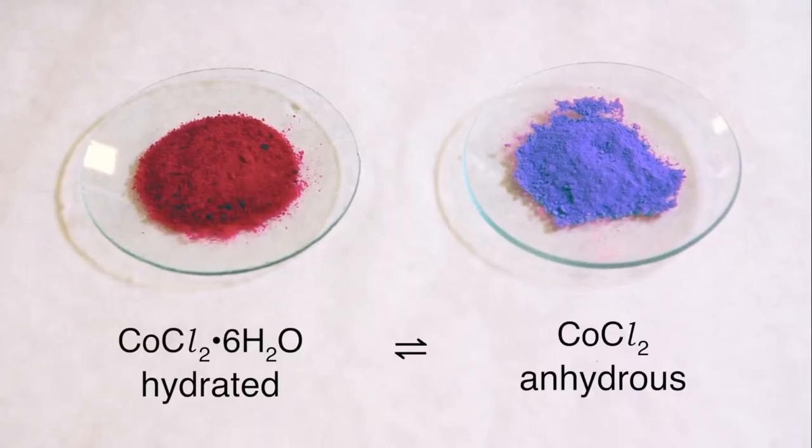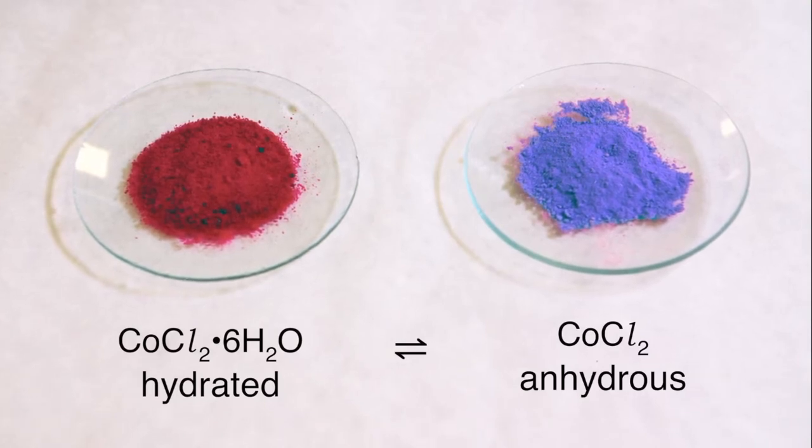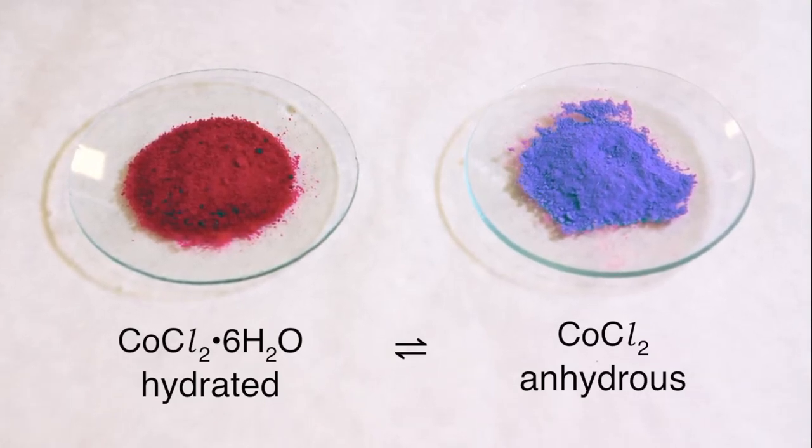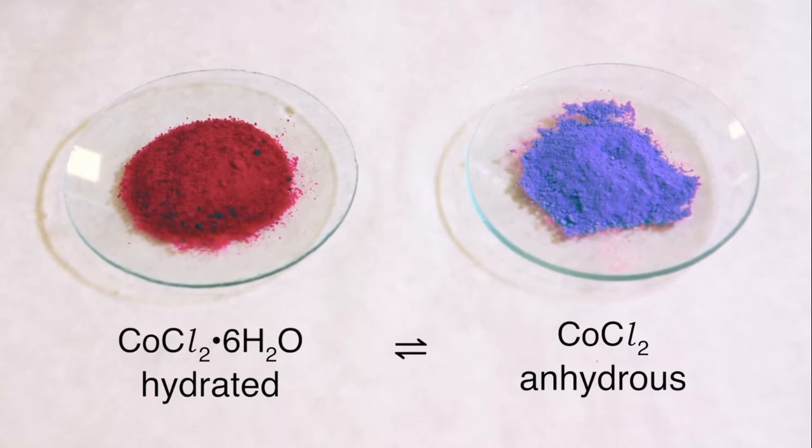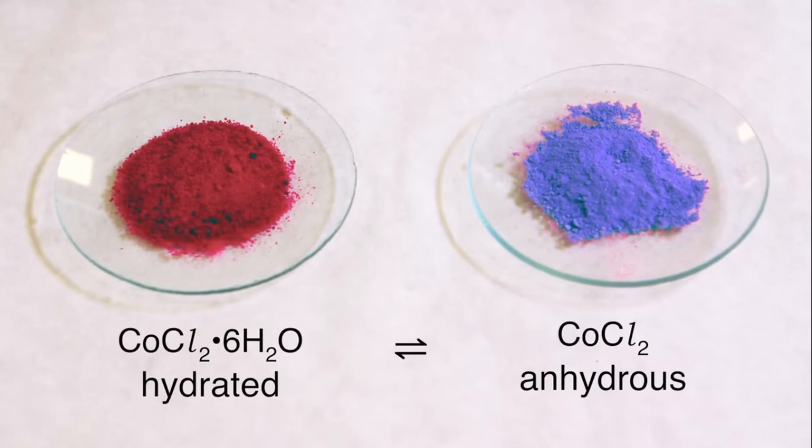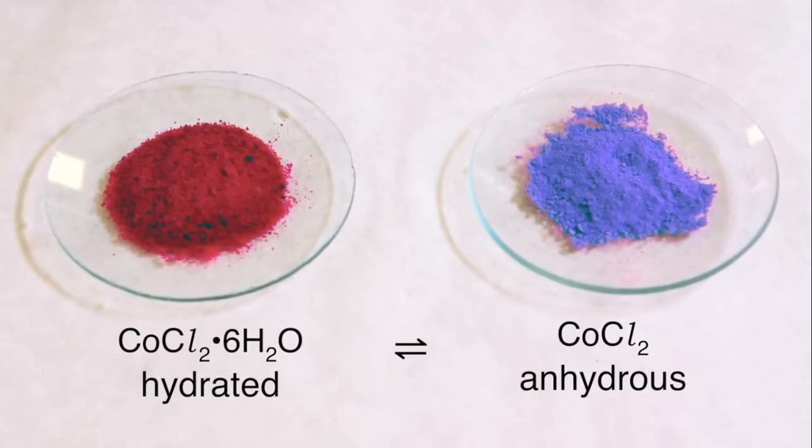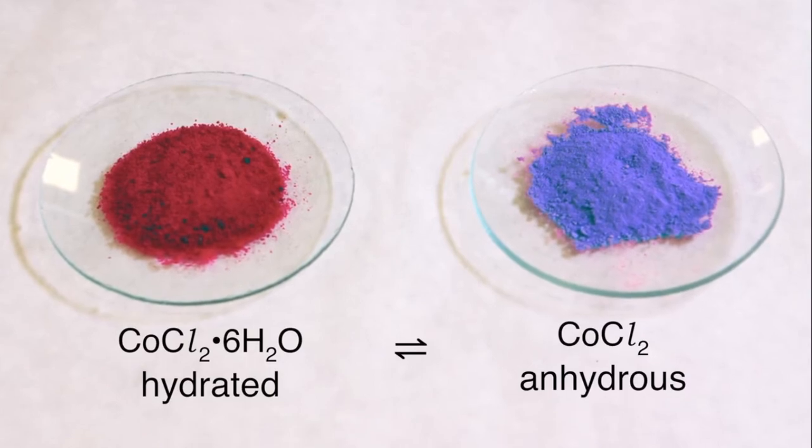Cobalt chloride can exist as a hydrated pink or anhydrous blue compound. The process for heating a hydrated salt is called dehydration. Dehydrating cobalt chloride results in a color change that can be reversed. This reversible reaction can be observed in the laboratory.